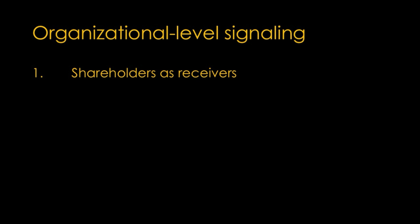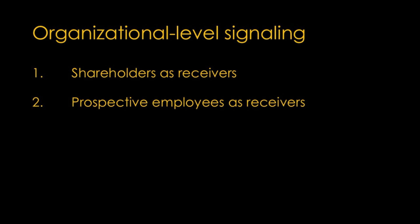In an organizational context, signaling theory helps explain how organizations communicate information about themselves to stakeholders when there is information asymmetry. Organizations frequently use signals to communicate with their stakeholders, which is important because stakeholders often lack complete information about an organization's internal operations and future prospects. Take leadership succession as an example. The appointment of a new leader, especially following a period of poor performance or misconduct, can signal an organization's intent to change direction. Stakeholders often react positively to outside successors in those situations because it signals a clean break from past problems. Organizations also use signals to attract potential employees — for instance, offering flexible work arrangements can signal that an organization values work-life balance.